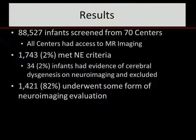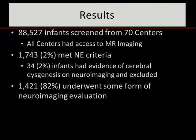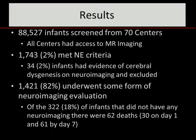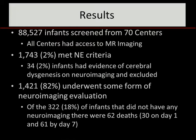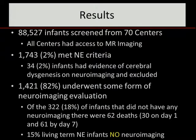When we looked at the remaining infants, 82% underwent some form of neuroimaging — meaning 18% did not. I initially thought this was because so many babies died before imaging could be done, but I was wrong. Of those who did not have neuroimaging, there were only 62 deaths — 30 on day one and 61 by day seven — but the vast majority who didn't get any imaging survived. So 15% of infants in the category of stupor, coma, or seizures got no neuroimaging of any kind at any stage.